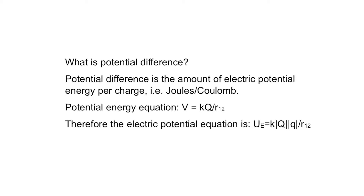I mentioned the word potential difference. What is it? Potential difference is the amount of electric potential energy per charge. The equation is Coulomb's constant times the magnitude of the center charge divided by the distance between the two charges.